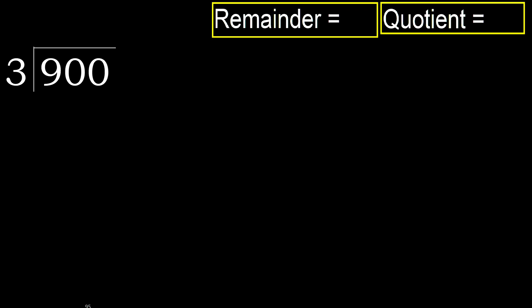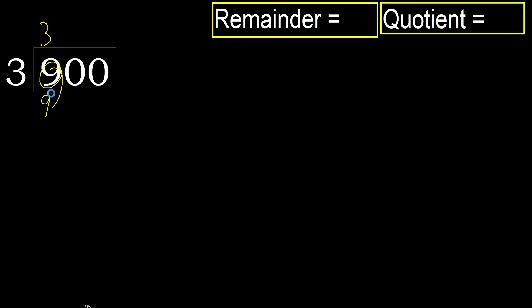900 divided by 3. 9 is not less, therefore with 9: 3 multiplied by which number is nearest to 9 but not greater? 3 multiplied by 4 is 12, 12 is greater. Multiply by 3: 9 is not greater.